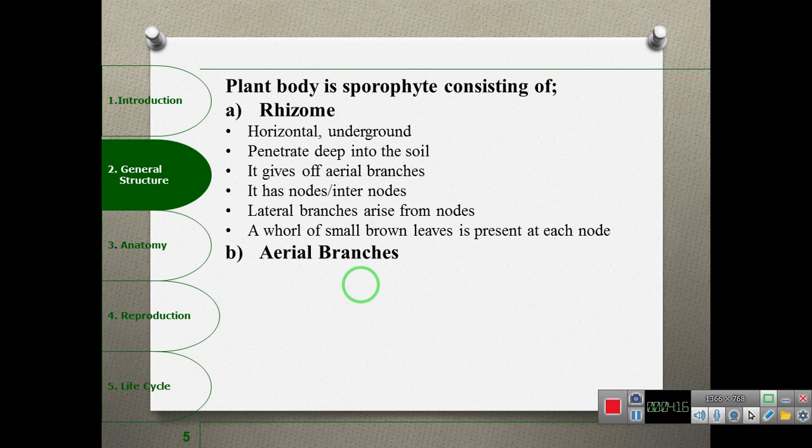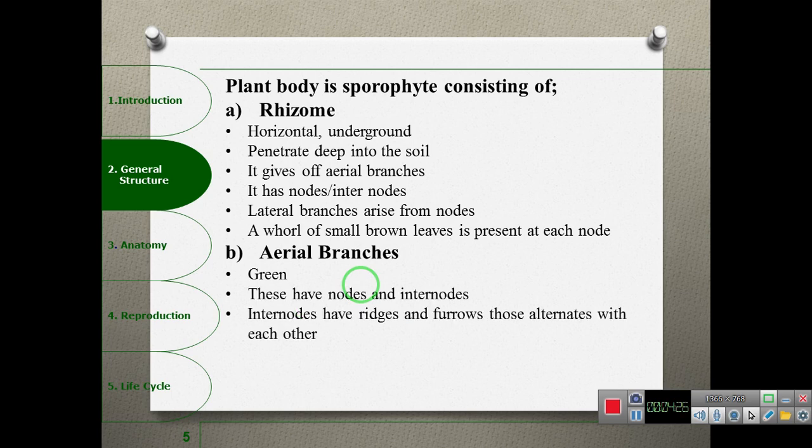The fertile shoot is brown, not green. The sterile branches are green and have nodes and internodes, with ridges and furrows or grooves. Similar to how cotton and maize grow with ridges and furrows, the stem has ridges and grooves.